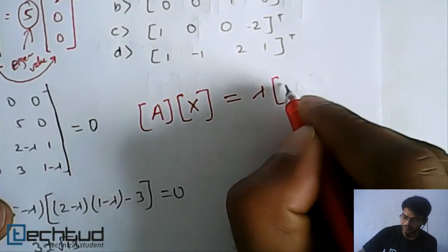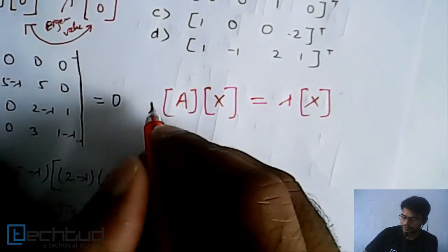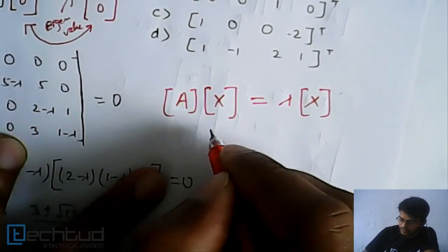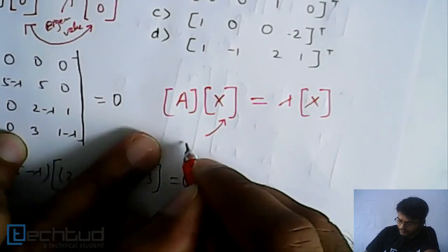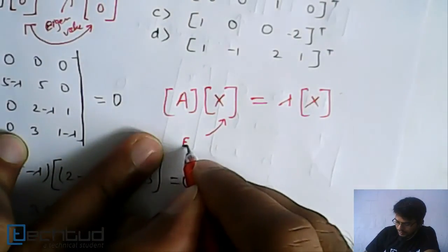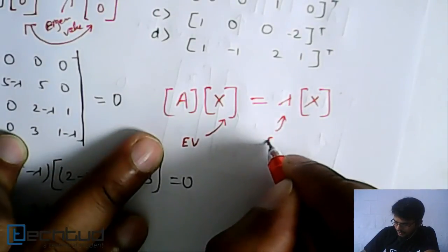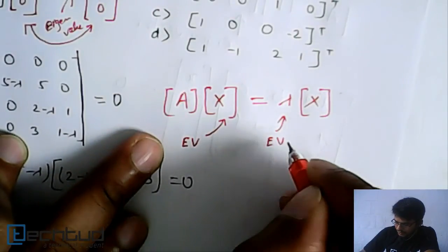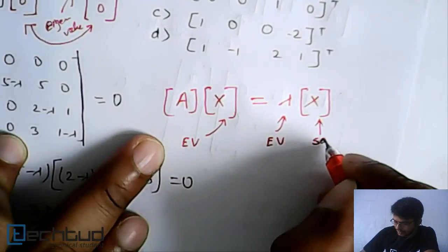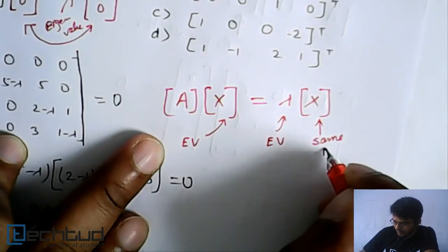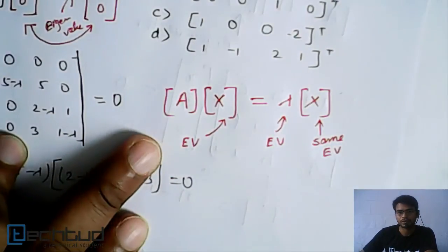A·x equals lambda times x — where x is the eigenvector, lambda is the eigenvalue, and on the right side x is the same eigenvector. This is the important property to remember. I hope this is clear now — mark it as a star. If you have any doubt or question, ask in the doubt section.